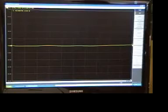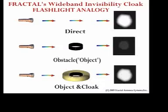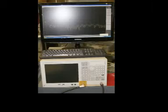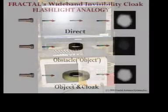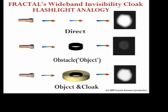Any obstruction will cut down that intensity, depending on how much is blocked. Just as with a flashlight beam, the size of the obstruction decides how much is blocked. Our door is kind of small, so when we can see it in action, it obstructs about 70% of the intensity, or brings it down by minus 5 dB. The objective of this demo is to show that slipping a cloak onto this door will virtually restore the intensity as if there is no obstruction at all.